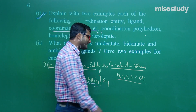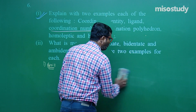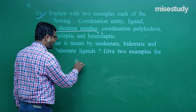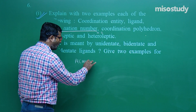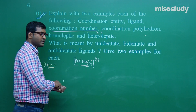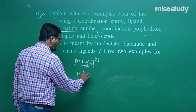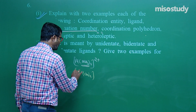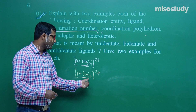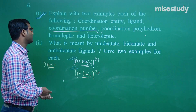Ligands can be monodentate, bidentate, tridentate, tetradentate, hexadentate, pentadentate, and so on. For example, [Pt(NH3)4]^2+ has coordination number 4 (monodentate NH3). But [Pt(En)2]^2+ — EN is bidentate, 2 ligands × 2 = coordination number 4. Coordination polyhedron: the spatial arrangement of ligands around the nucleus gives a particular structure — MA4 may be tetrahedral or square planar; MA6 gives an octahedral complex.